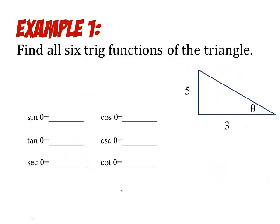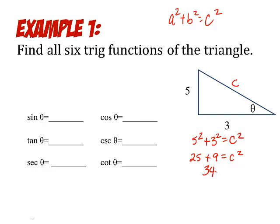Now, how to find the 6 trig functions of a triangle. You are going to be given triangles and one side is missing. So you are going to have to use good old Pythagorean theorem to find the missing side. Remember, C is always the hypotenuse. So in this case, I'm just going to plug it in: 5 squared plus 3 squared equals C squared. 25 plus 9 equals C squared. Well, that's 34, and I have to take the square root. So C is the square root of 34. So I know the three side lengths now.